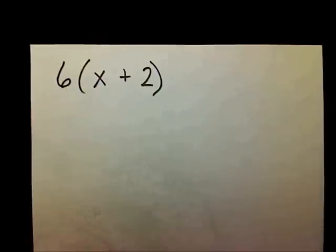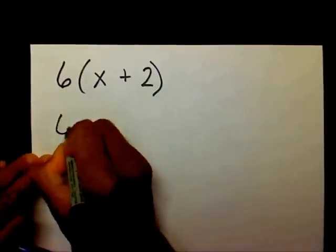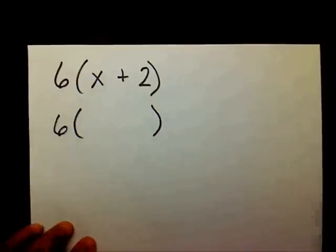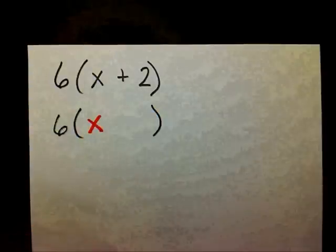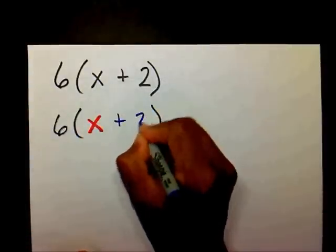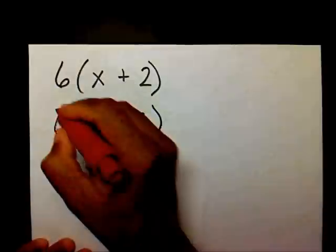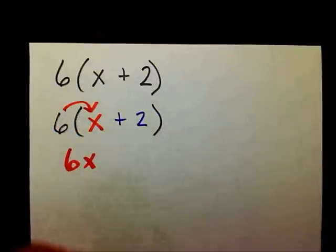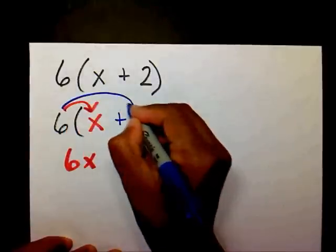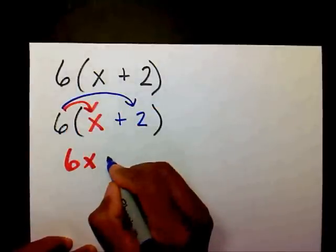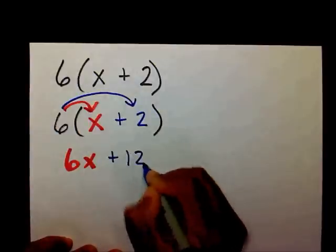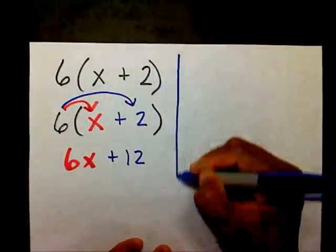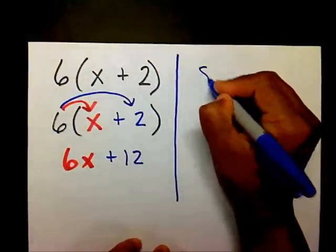Let's try another one. We have 6 times, in parentheses, x plus 2. I'm going to take 6 and multiply it times the x to get 6x, and take 6 and multiply it times plus 2 to get plus 12.